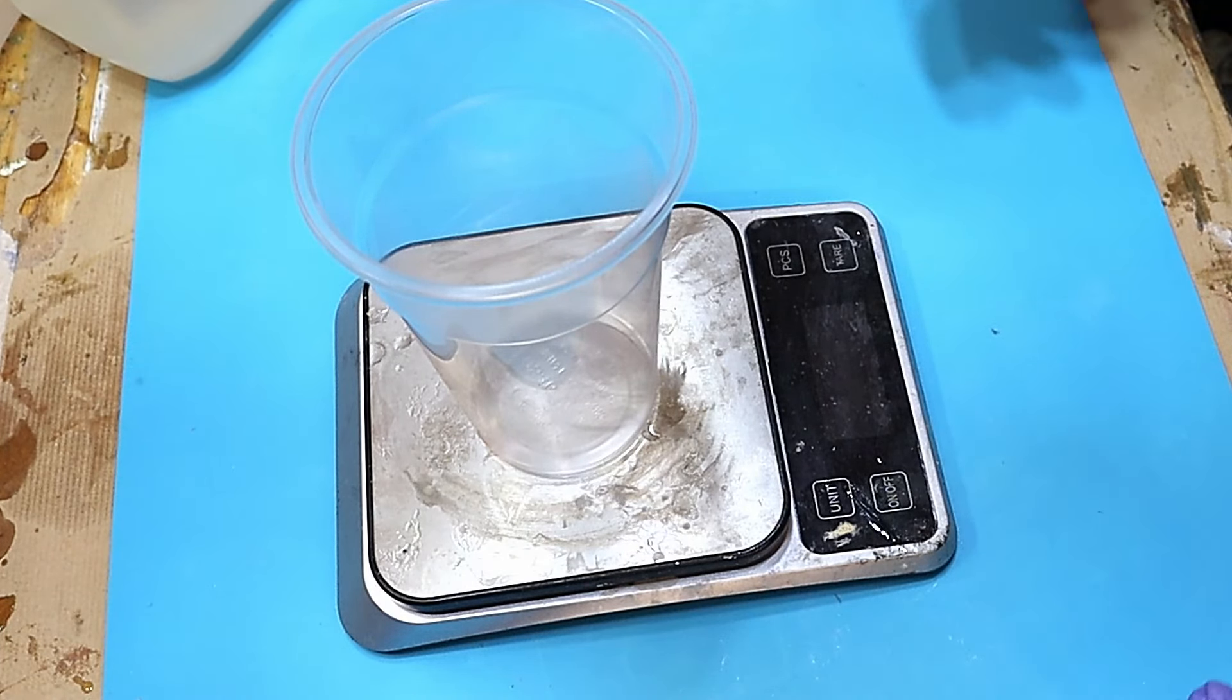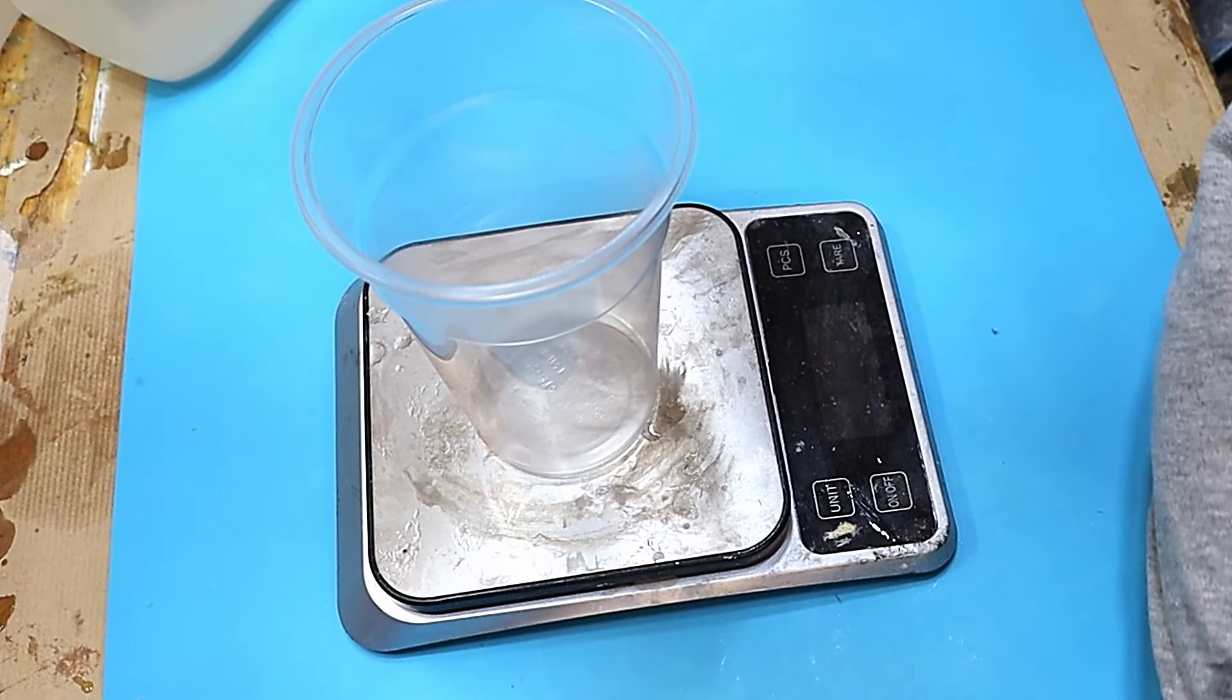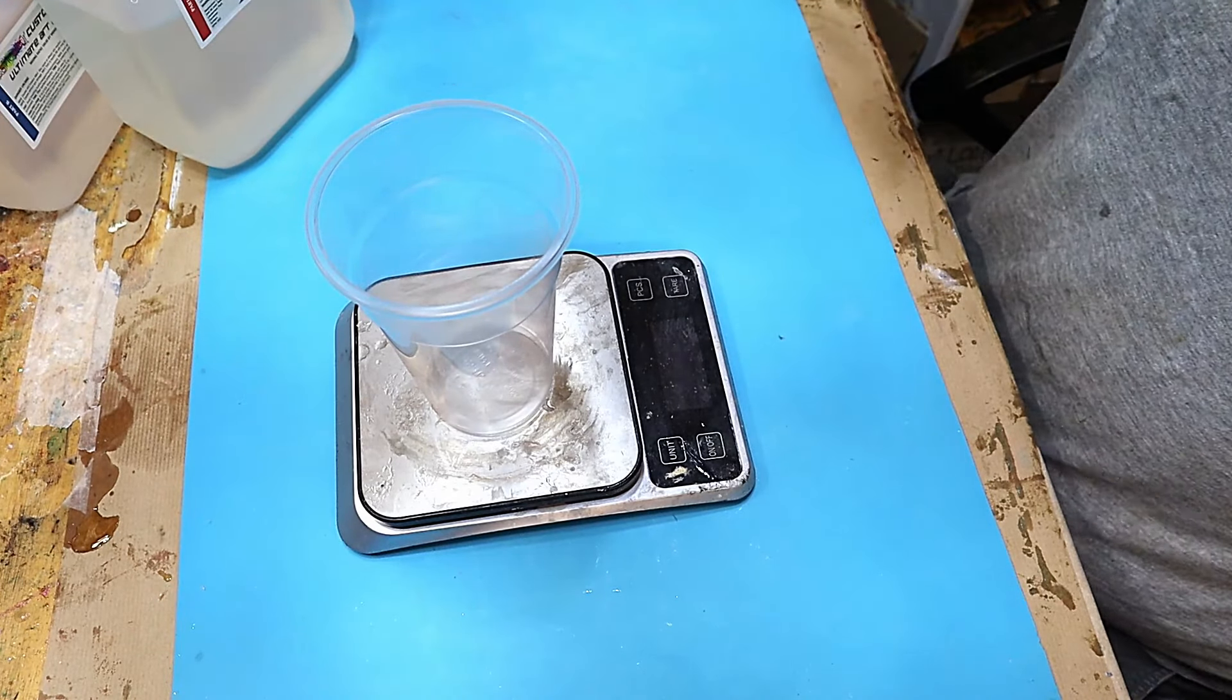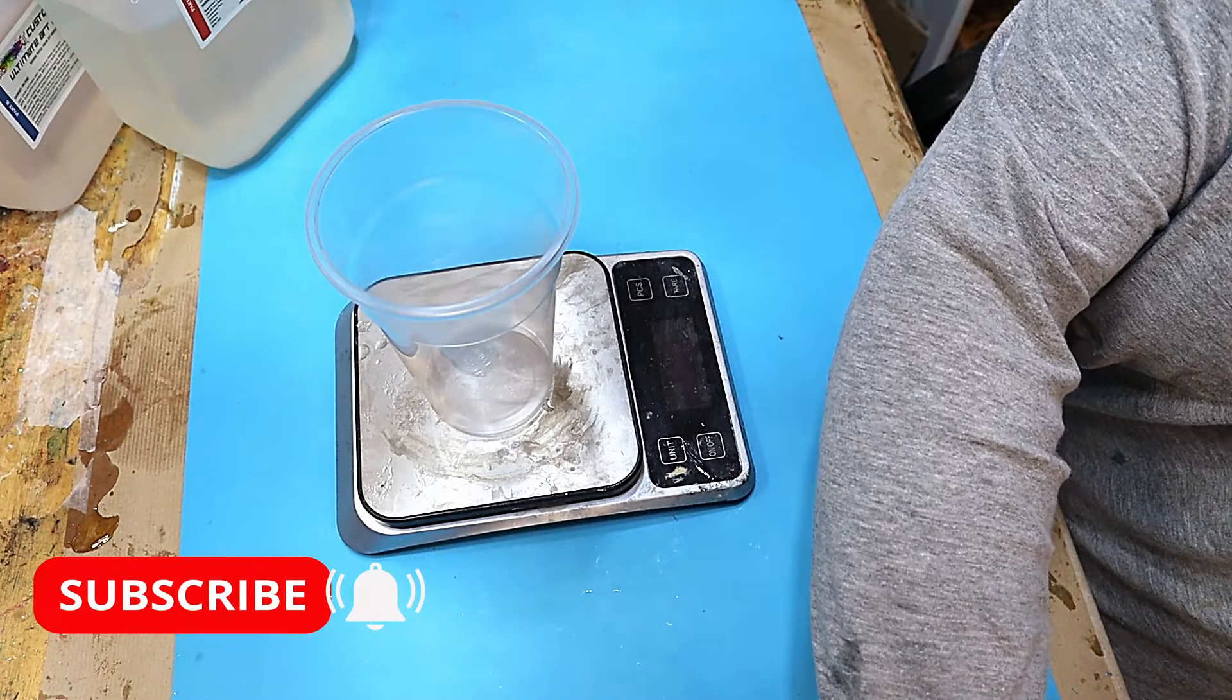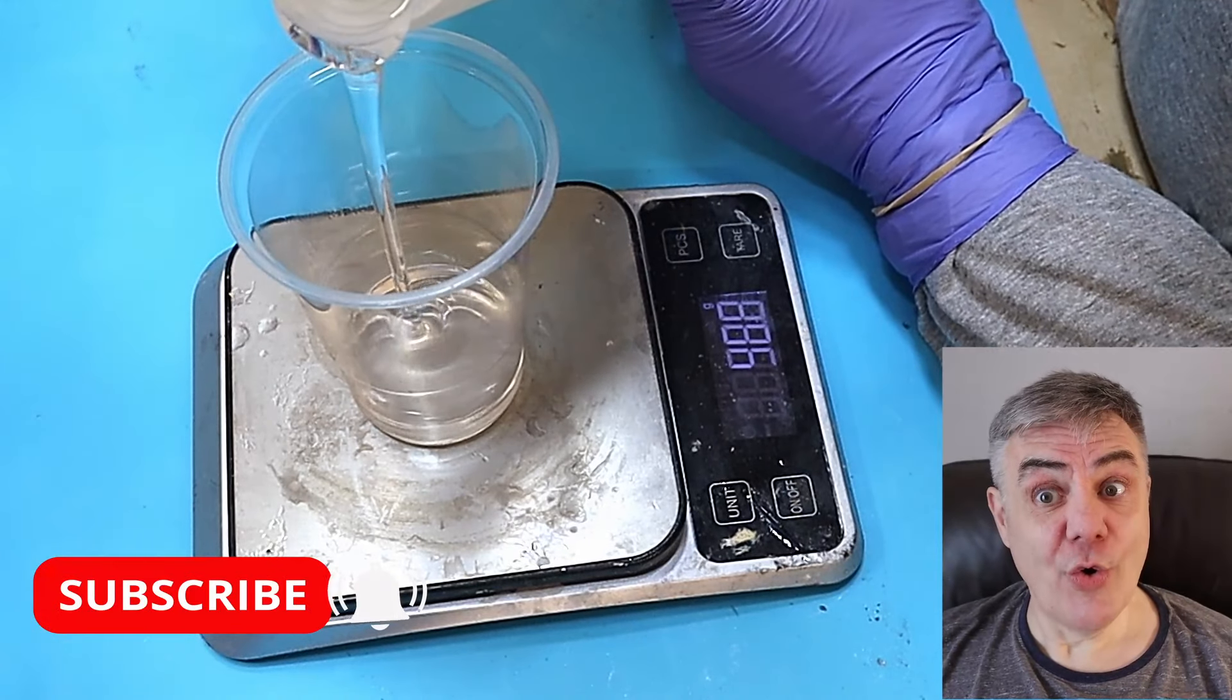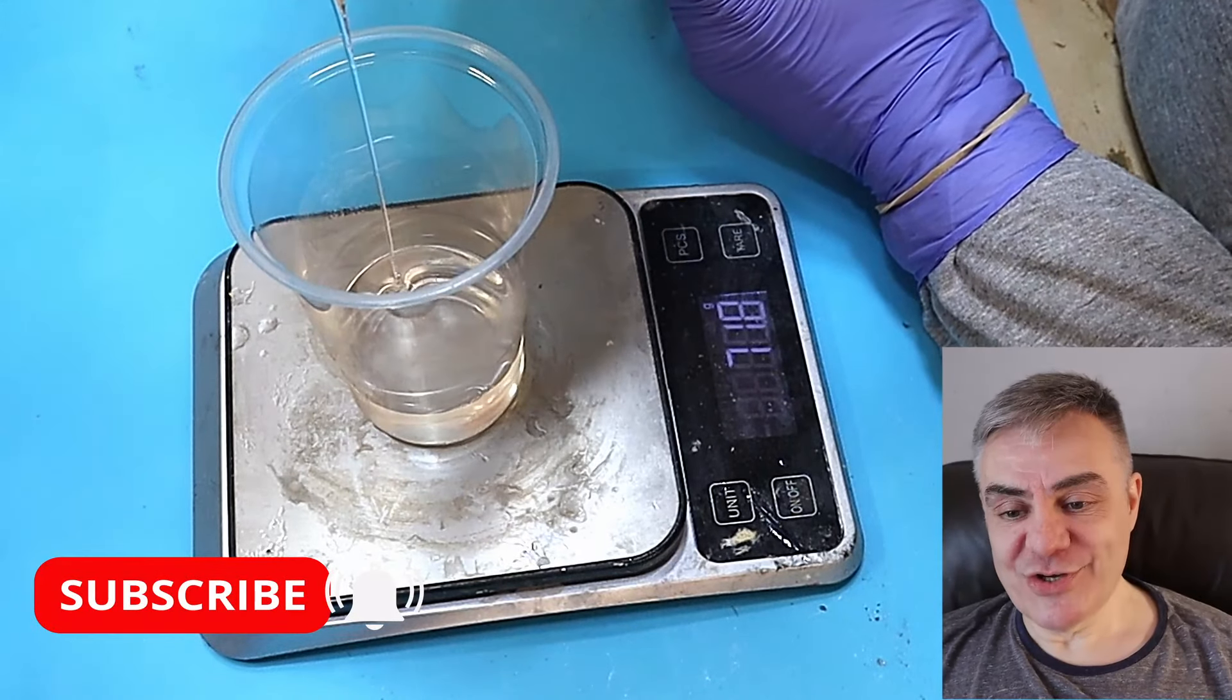The other thing is make sure that you use the right measurement. I always put part A in first and then part B on top of that. Now I'm going to show you how I mix it and what I do with it once it's mixed before I use it to cast with. Don't forget to hit that subscribe button and ring that notification bell so you don't miss out on any of my future videos.